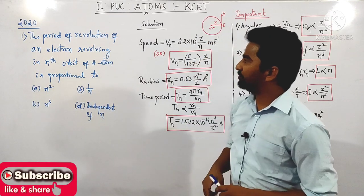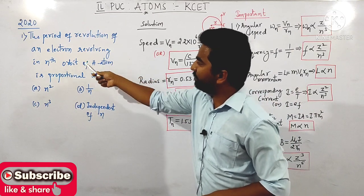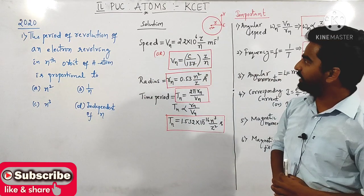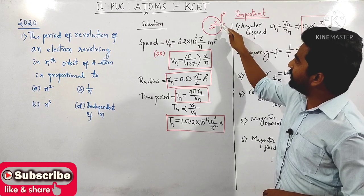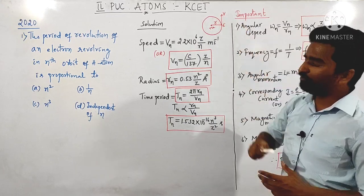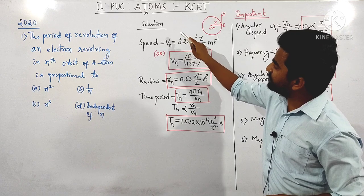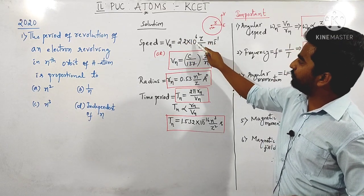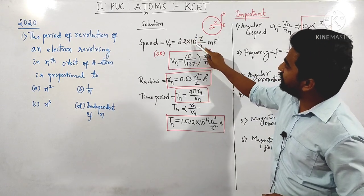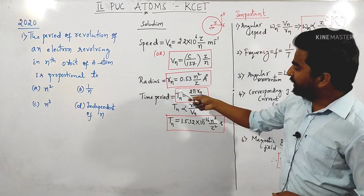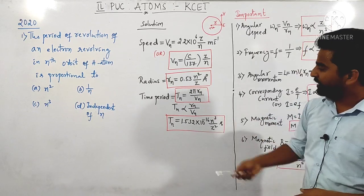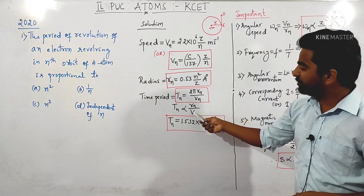Let's move on to the first question asked in 2020: the period of revolution of an electron revolving in the nth orbit of hydrogen atom is proportional to what? Here Z is the charge of the nucleus, R is the radius of the orbit, and the electron is revolving with velocity V. The speed in the nth orbit is given by 2.2 × 10⁶ × Z/n. Time period is proportional to circumference divided by speed, so time period is proportional to radius divided by speed.